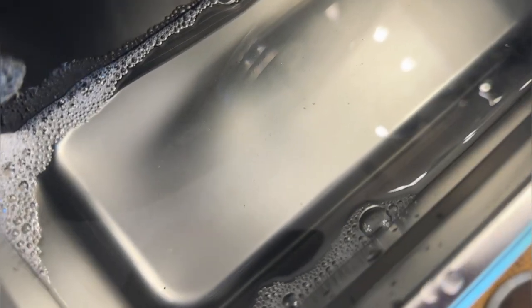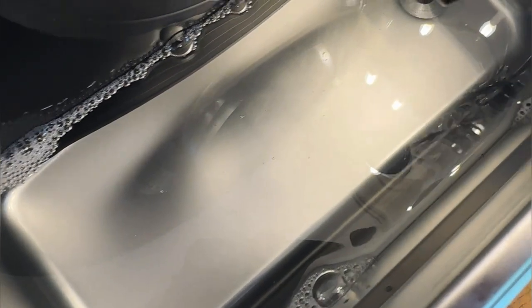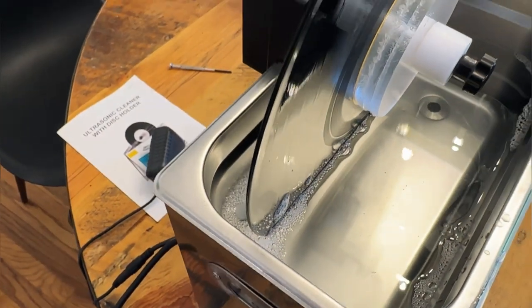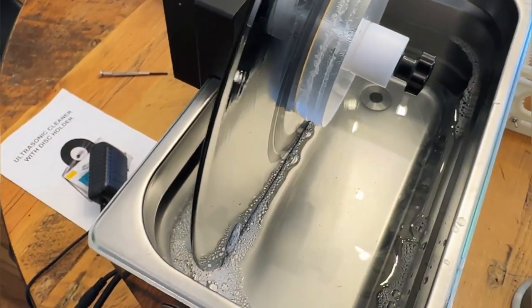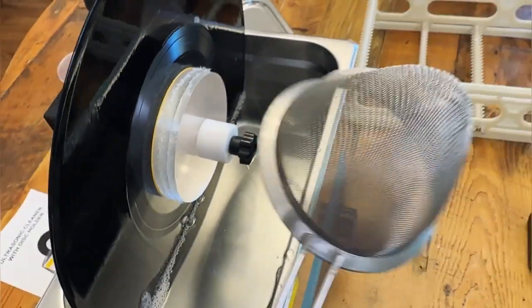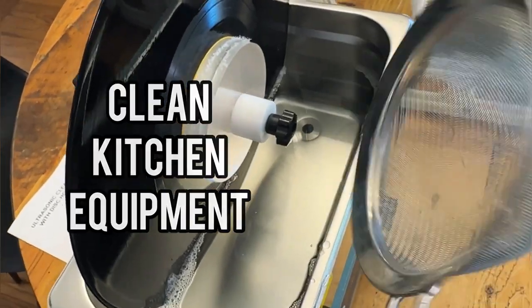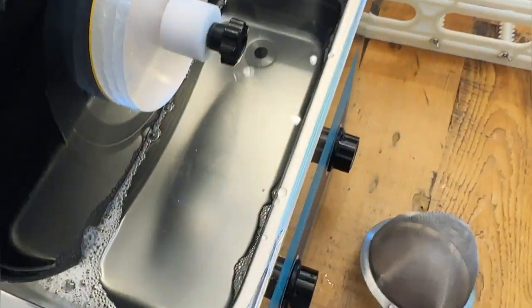All right guys our timer just stopped here and as you can see we've got a good amount of sediment at the bottom of our tank here. This all came off of this record which is great. We can do a lot of other things in this tank here. I like to clean kitchen equipment like this. It's really hard to clean and hard to get done. We can just set it in there. I'll show you that here in a second.